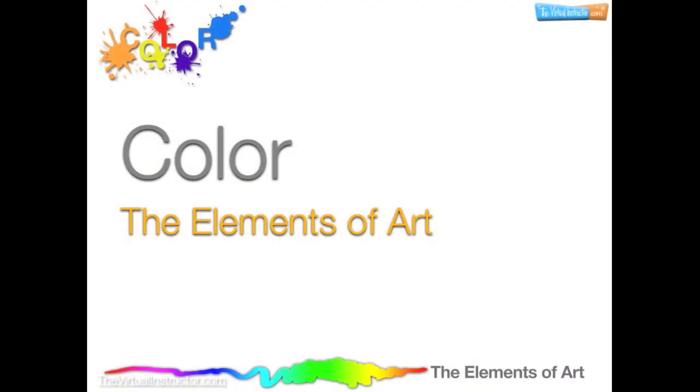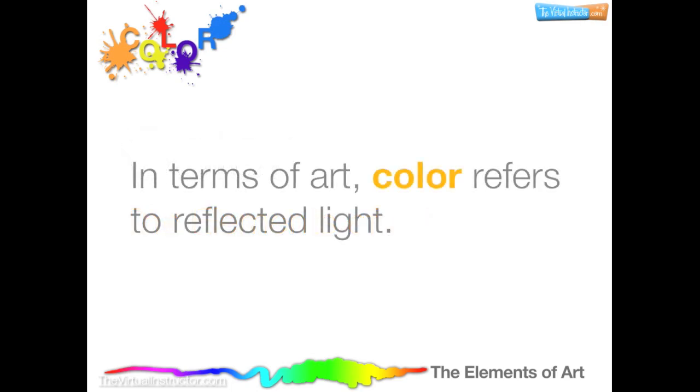Color is one of the seven elements of art. In terms of art, color refers to reflected light. Light from the color spectrum comes down and reflects off of objects. The colors that we see are reflected, while all other colors of the color spectrum are absorbed.